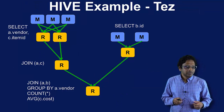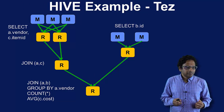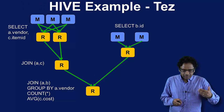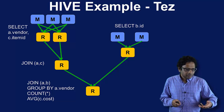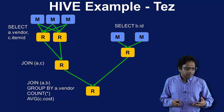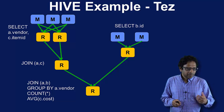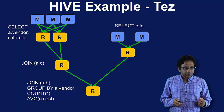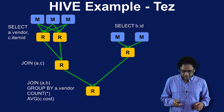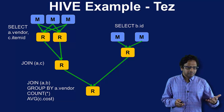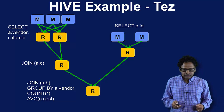Writing the same thing in TEZ, the intermediate map steps are gone — you're not writing to disk. You're reusing containers and data, so you end up with a simplified graph and much better performance. This is one example of how TEZ works. As mentioned, these newer frameworks have a rich set of features and lots of advantages.